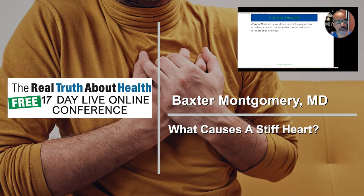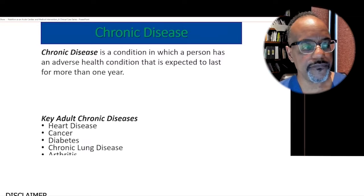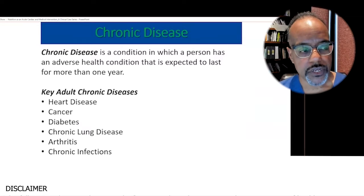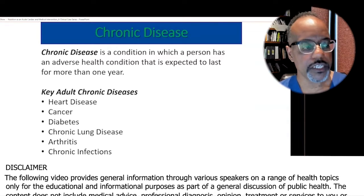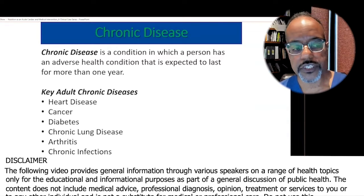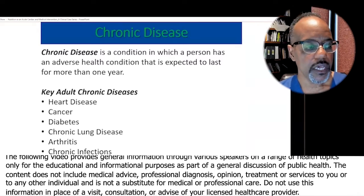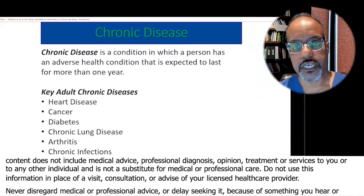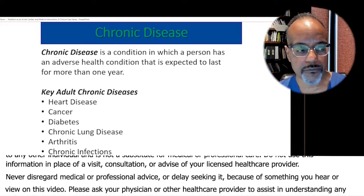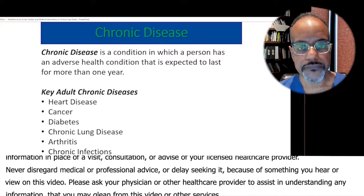Chronic disease — what is chronic disease? Basically, it's simply an illness or an ailment that's expected to last for more than a year. And we generally know what many of them are: heart disease, cancer, diabetes, lung disease, arthritis, chronic infections, and you can add more to this list.